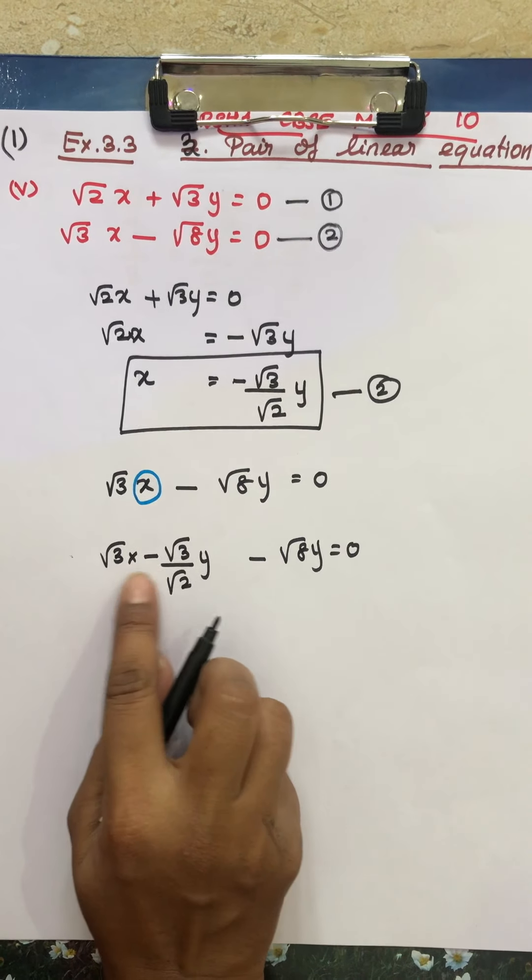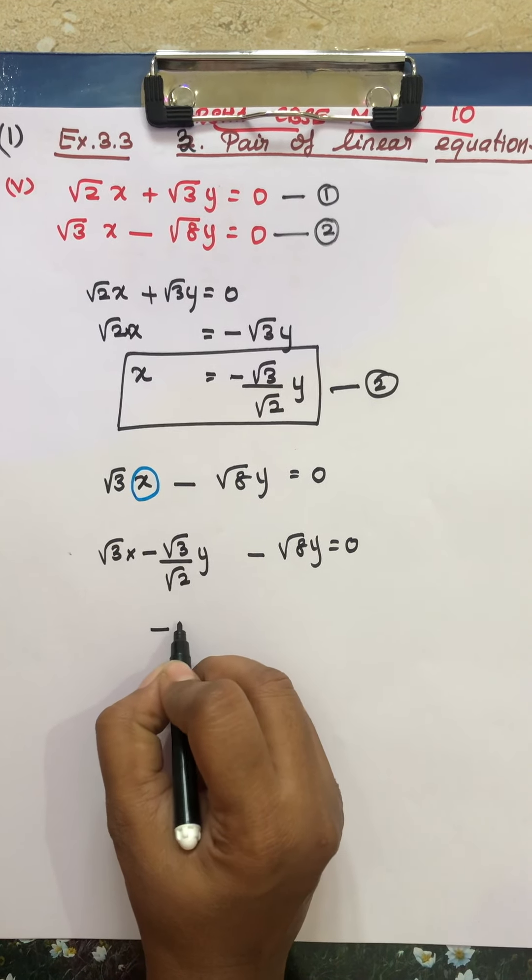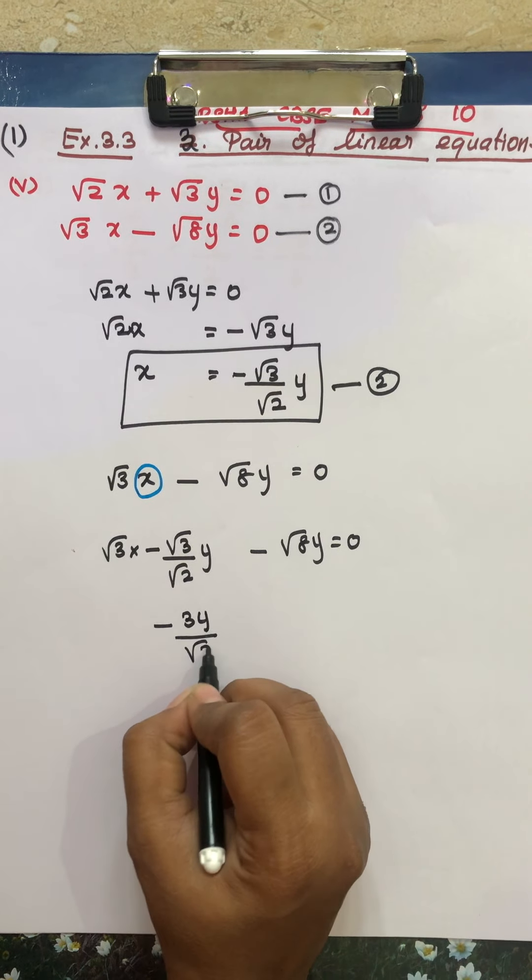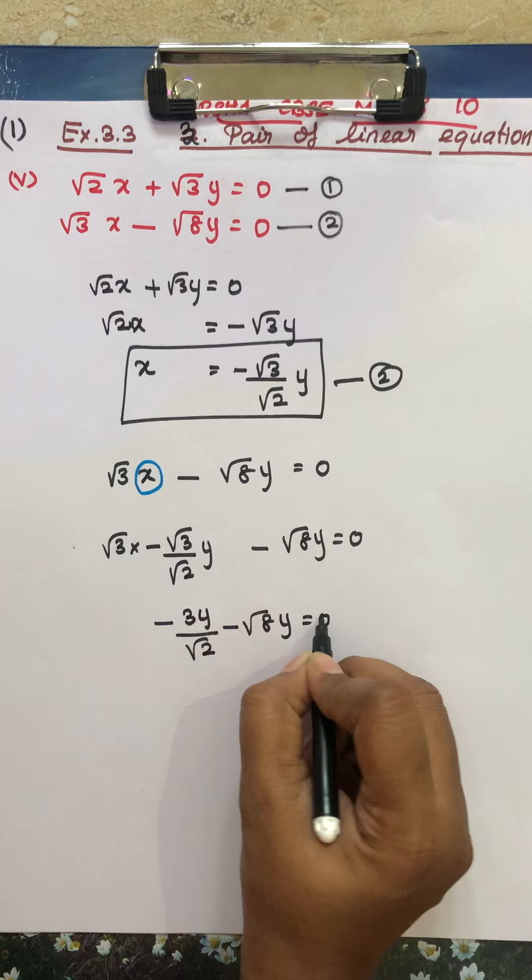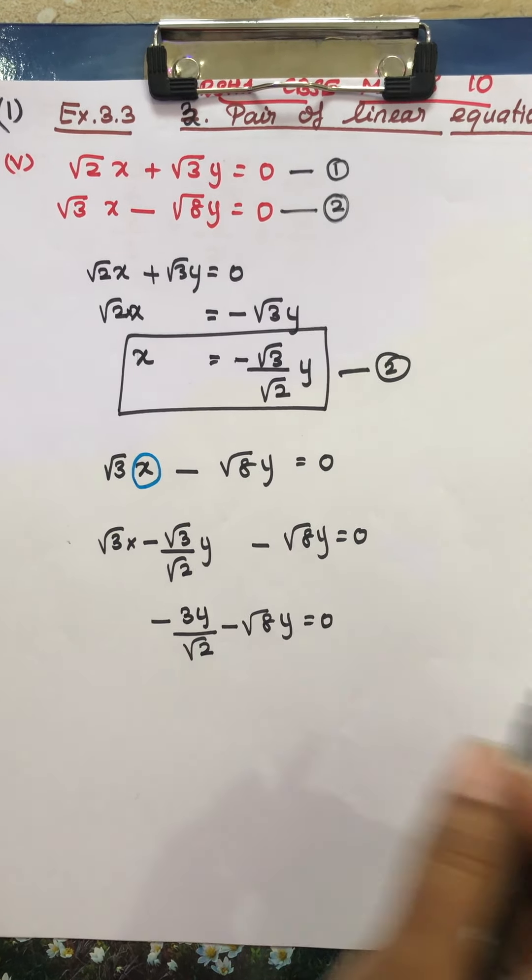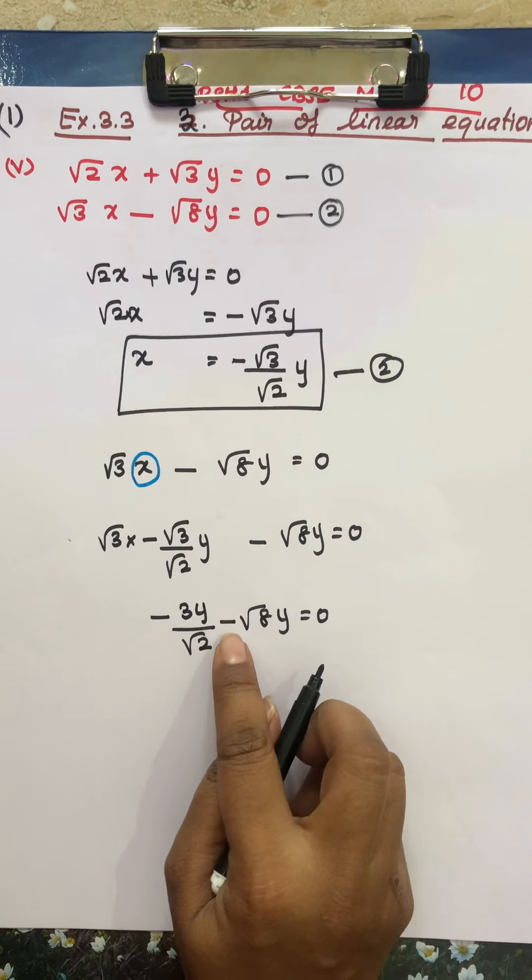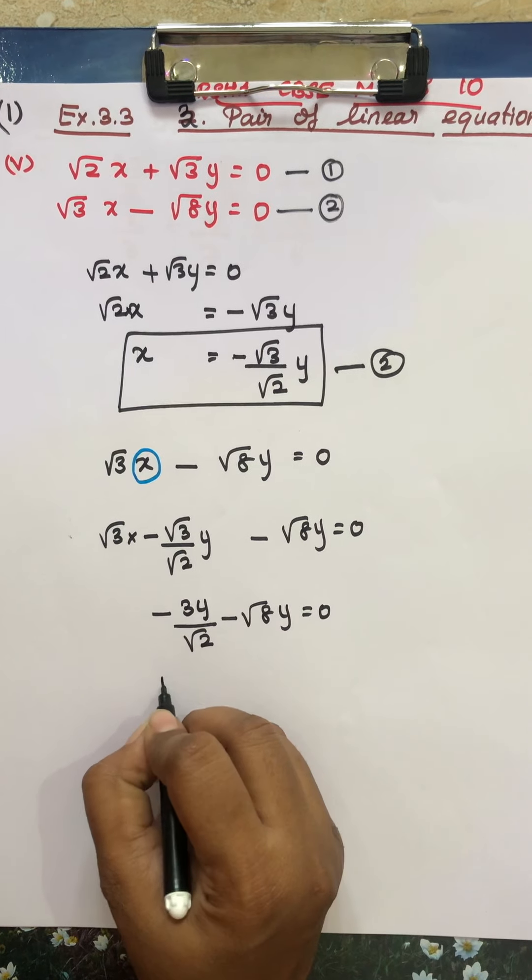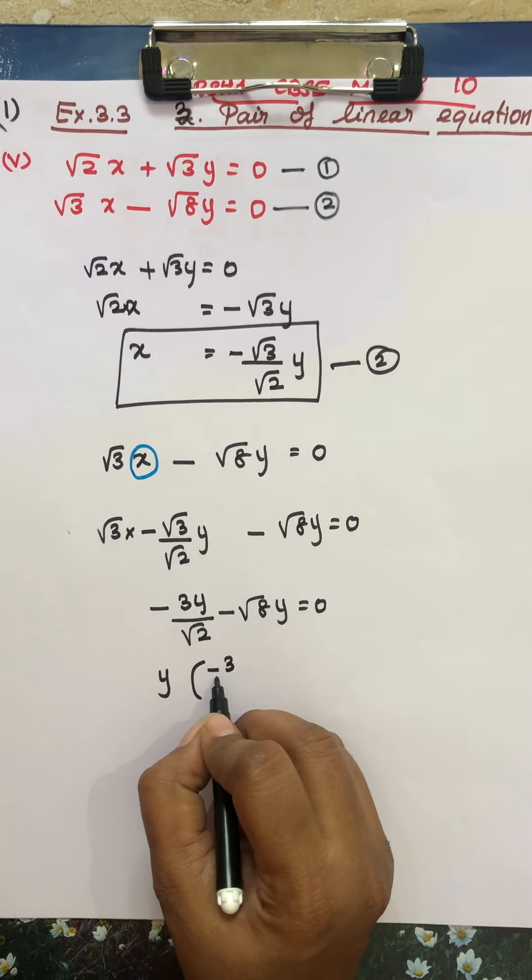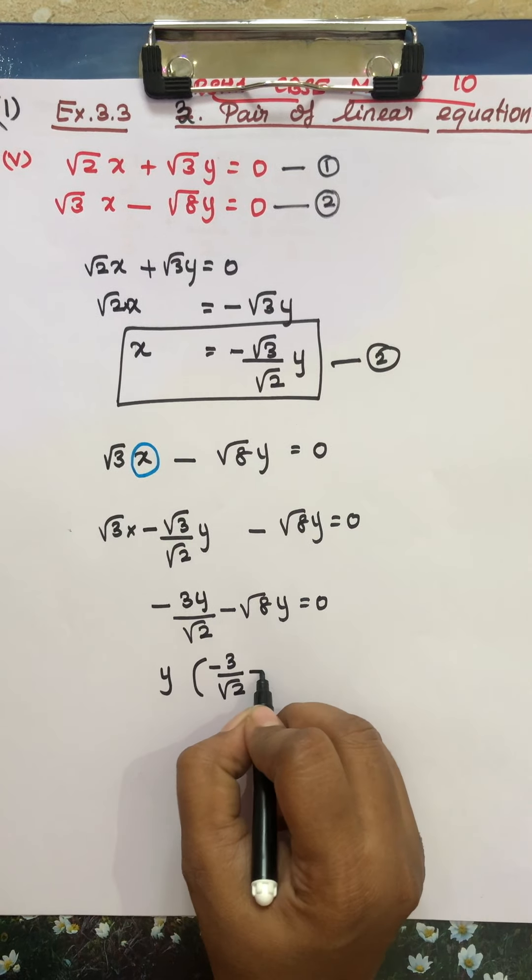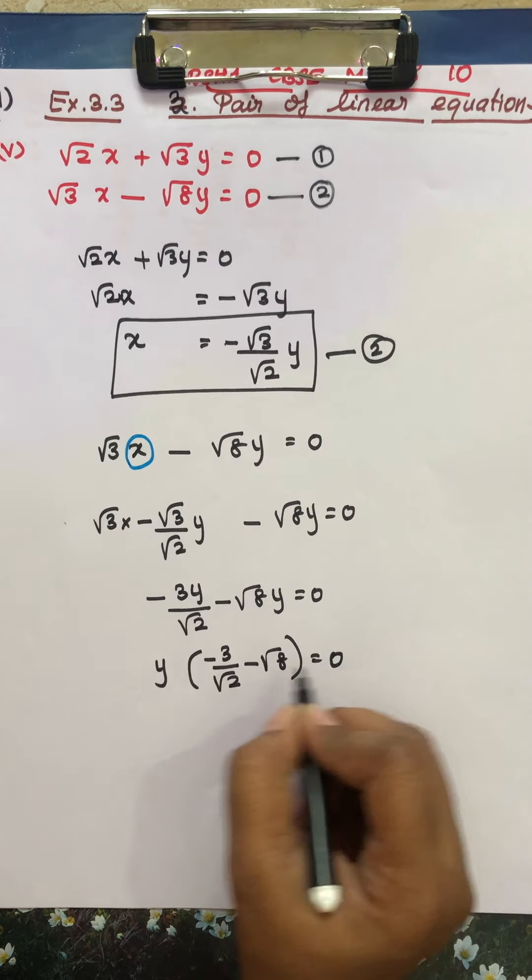So root 3x, on the charge, so apply the value of minus root 3 by root 2 y minus root 8y equal to 0. See, this is root 2. So root 3 into root 3, 3y by root 2 minus root 8y equal to 0.